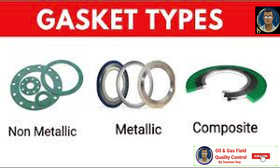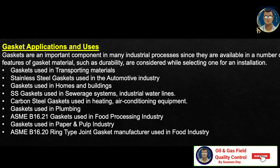Gaskets are an important component in many industrial processes since they are available in a number of specifications. The features of gasket materials such as durability are considered while selecting one for an installation. Applications include: gaskets used in transporting material; stainless steel gaskets used in automotive industry; gaskets used in homes and buildings; stainless steel gaskets used in sewer systems and industrial water lines; carbon steel gaskets used in heating and air conditioning equipment; gaskets used in plumbing (ASME B16.21); gaskets used in food processing and paper and pulp industries.